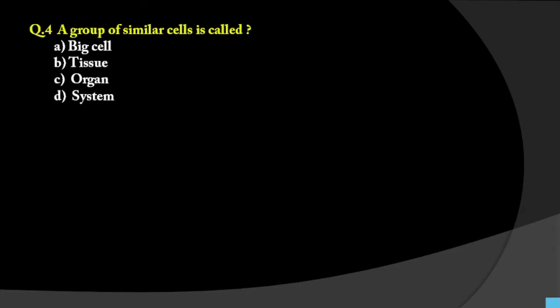Question number 4: A group of similar cells is called what? Many cells come together — do they form a cluster called big cell, or tissue, or organ, or system? When many similar cells with a similar specific function come together, they form tissue. Many tissues combine to form an organ, and many organs combine to form an organ system and the full human body. So the answer is tissue.